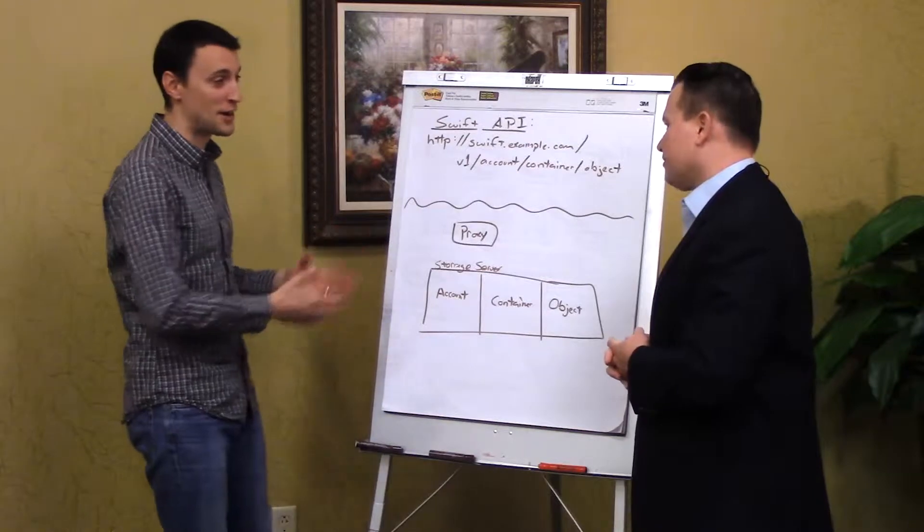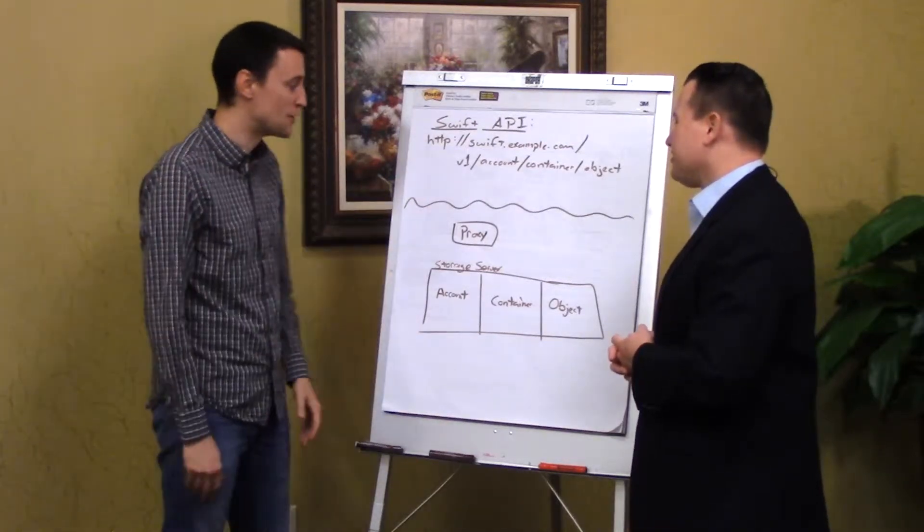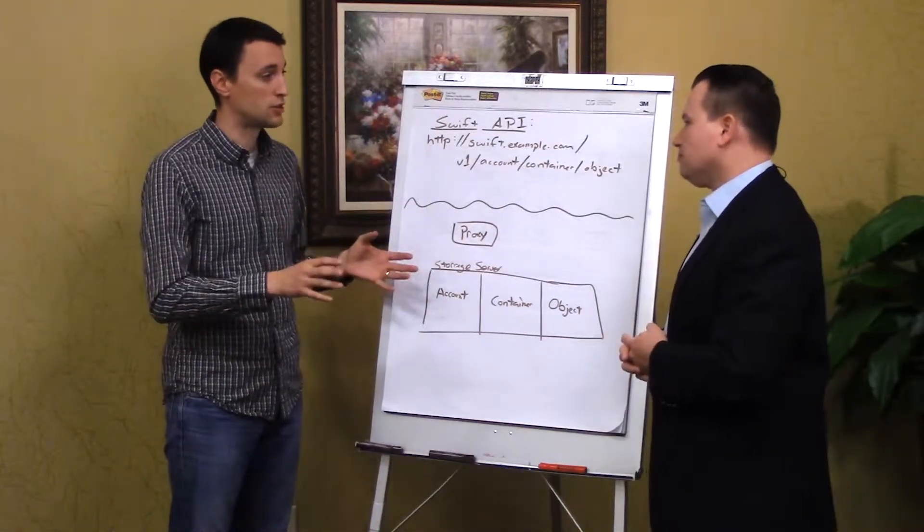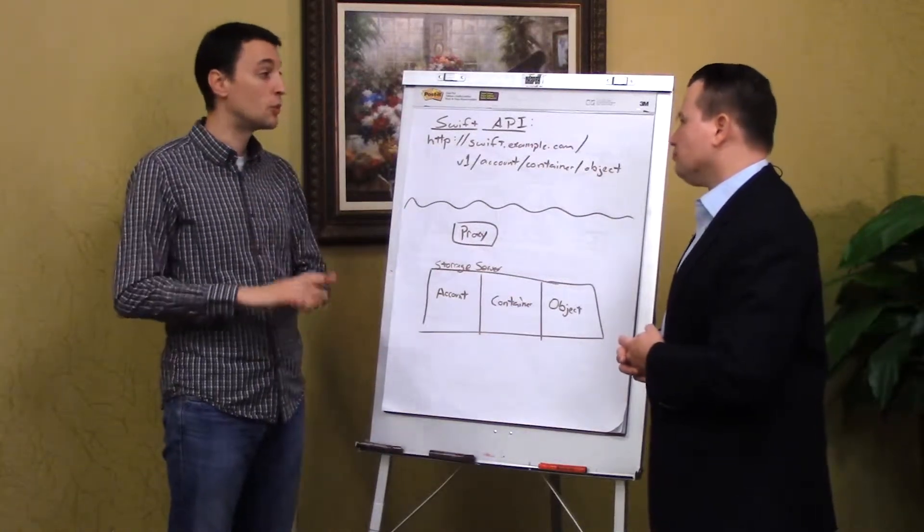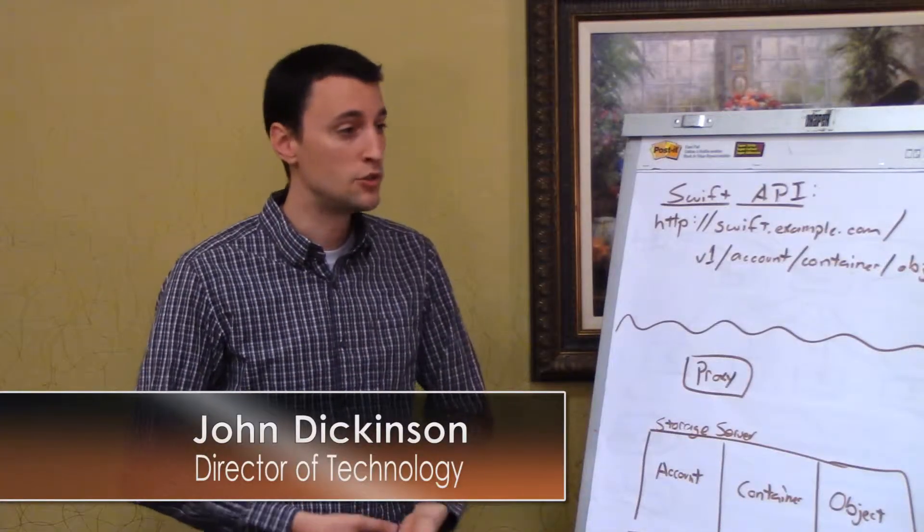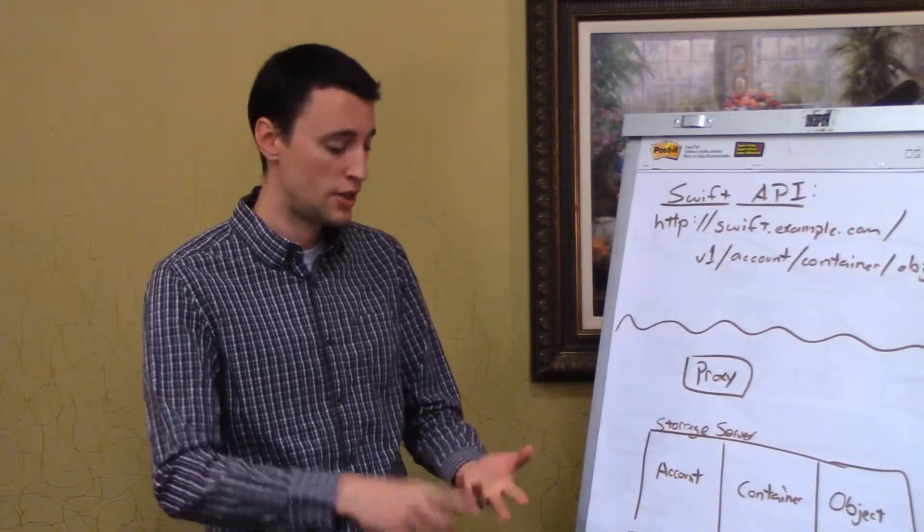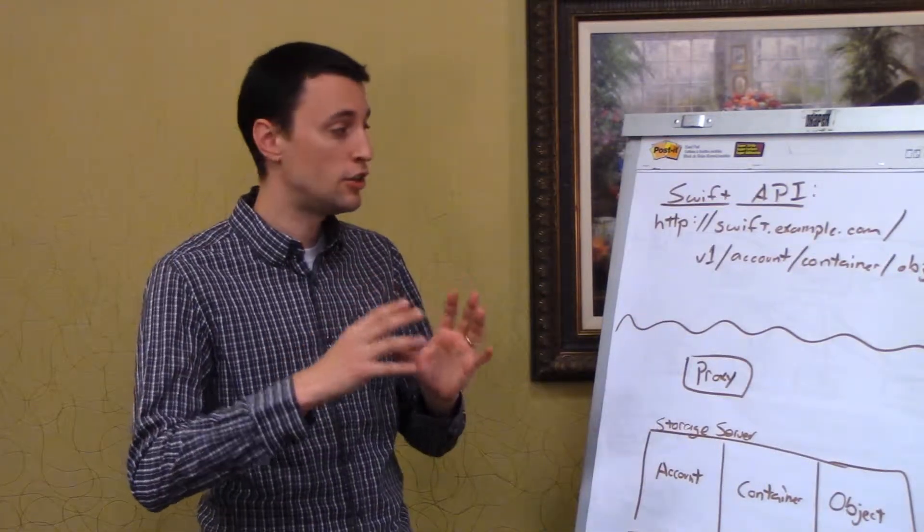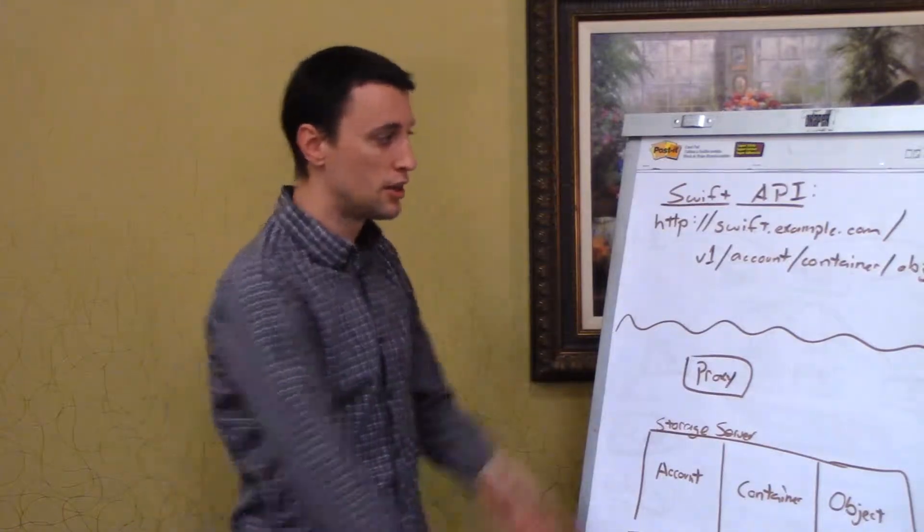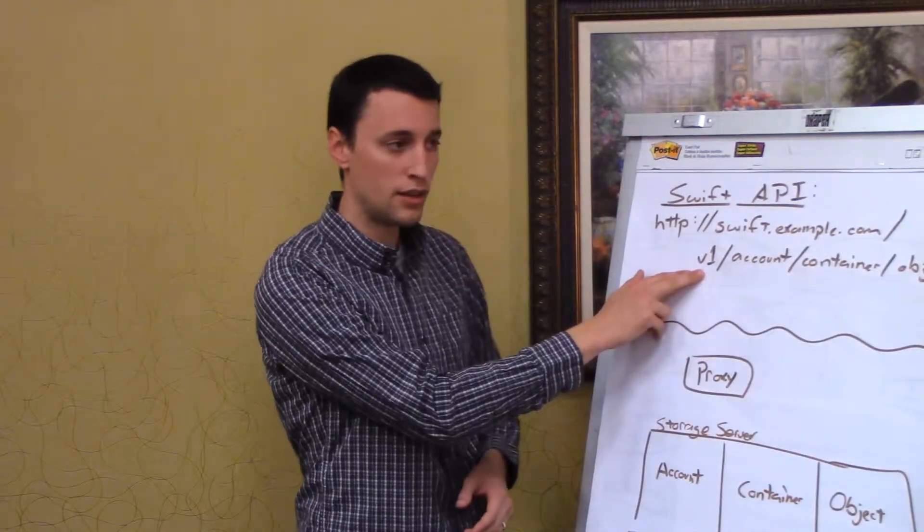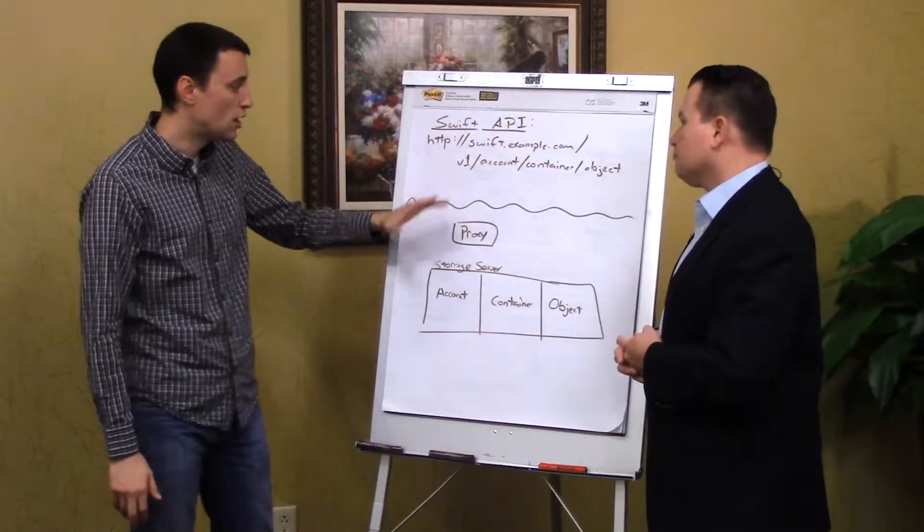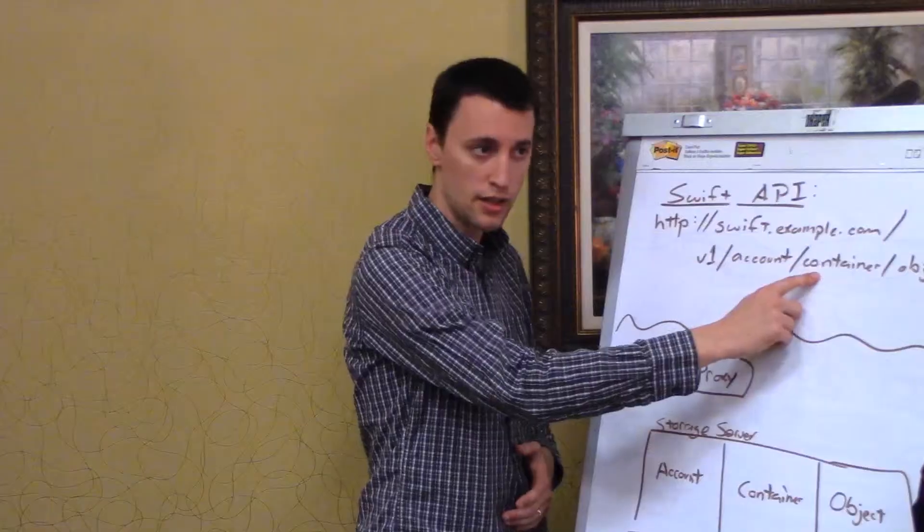So how does Swift in itself work? I love talking about this. This is what I've been living and breathing for the last several years. So the first thing we have to start with is what does the Swift API look like? And when we know what that looks like, then we can see how that fits into the different pieces and what that looks like in a big deployment. So to start with the Swift API, it's all HTTP based.